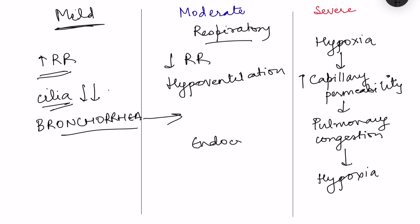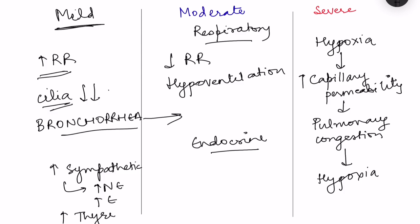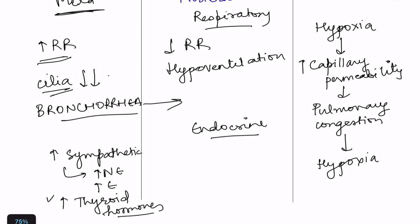In the endocrine system, initially in the mild state the body tries to respond with increased sympathetic activity, increasing norepinephrine and epinephrine release, increased thyroid hormone secretion, increased metabolism, and sympathetic-driven uncoupling at the mitochondrial level — all to increase heat production. But later, as seen in the cardiovascular system, there is decrease in sympathetic response and decrease in norepinephrine and epinephrine release, further decreasing basal metabolism, ultimately leading to depression of all systems.